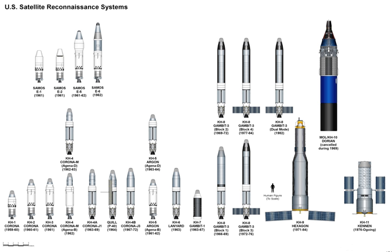Reconnaissance satellites have been used to enforce human rights through the Satellite Sentinel Project, which monitors atrocities in Sudan and South Sudan. During his 1980 State of the Union address, President Jimmy Carter explained how all of humanity benefited from the presence of American spy satellites. Photo-reconnaissance satellites, for example, are enormously important in stabilizing world affairs and thereby make a significant contribution to the security of all nations.